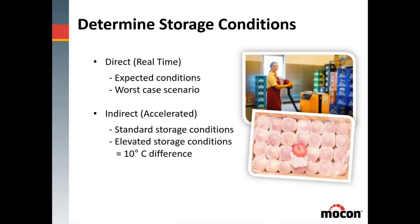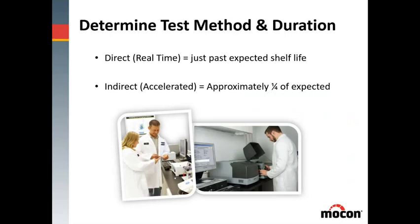We always store at our standard storage conditions — what we expect the product to see — and then at elevated conditions. We elevate typically in 10 degree Celsius increments, and you'll see why when I explain that portion. For duration, with real-time you want to go just past the expected shelf life. With accelerated studies, we estimate you can go to approximately one quarter of the expected shelf life, due to the accelerated process and temperature changes used.